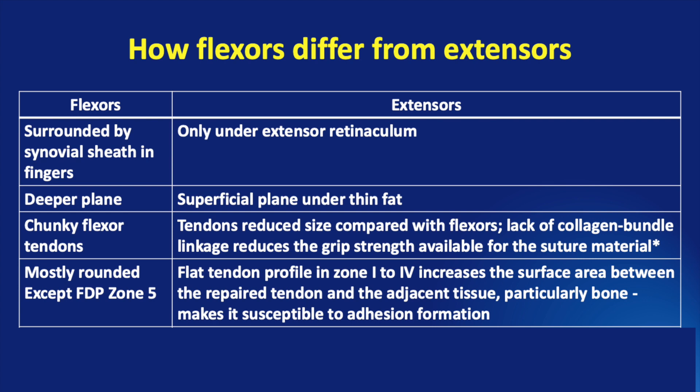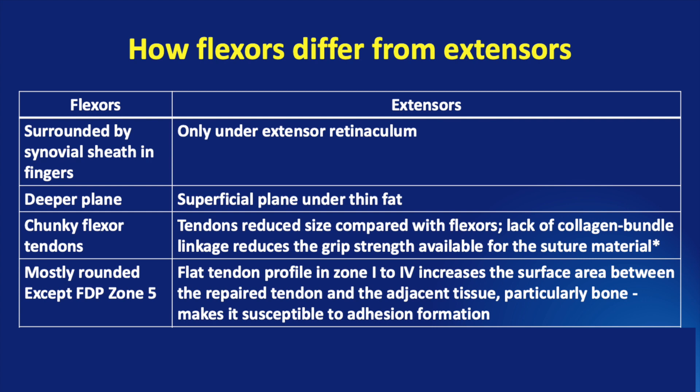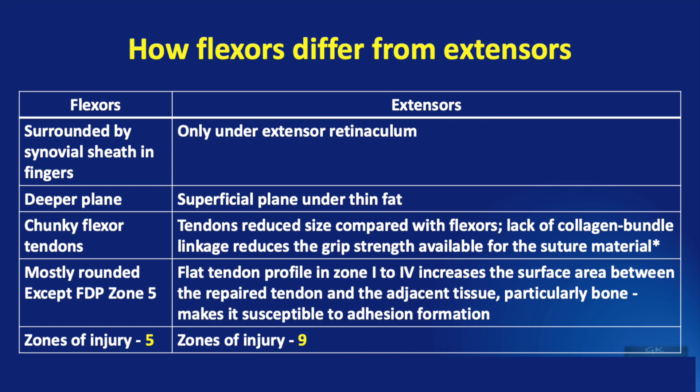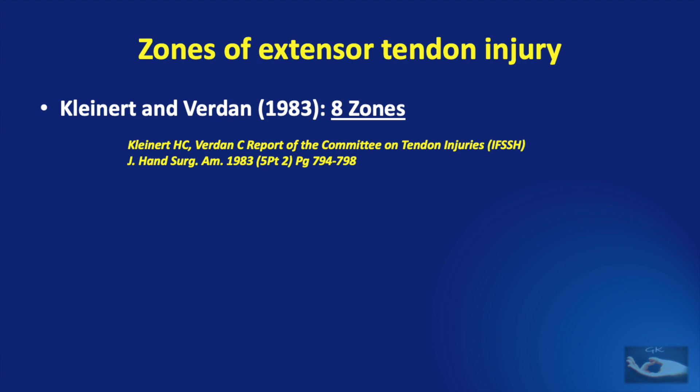Adhesion formation is common even after flexor tendon repair, but that is due to problems in the vascularity of the tendon. Finally, the zones of injury of flexor tendons have been divided into 5, whereas the extensor tendon zones of injury are 9. Originally, Kleinert and Burden in 1983 classified the extensor tendon injury into 8 zones. In 1999, Doyle added one more zone — the extensor muscle zone in the proximal forearm.